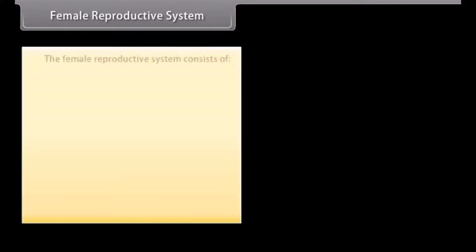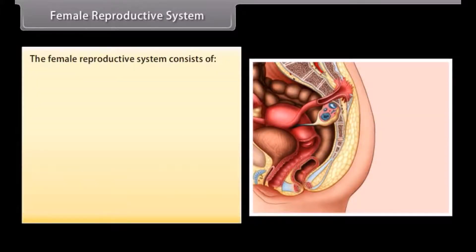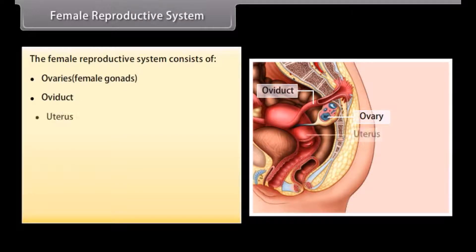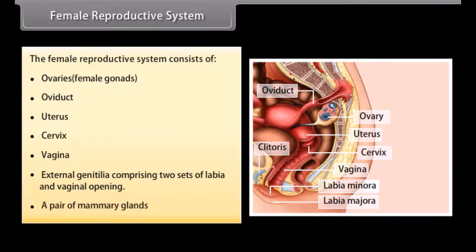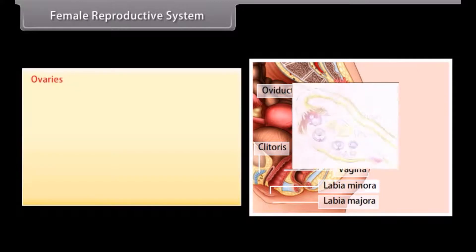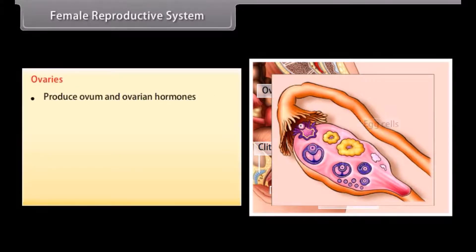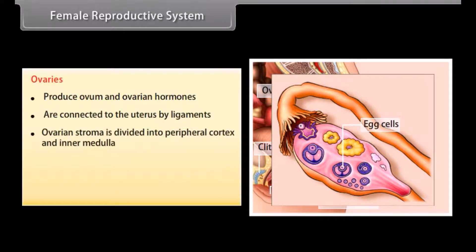The female reproductive system consists of ovaries (female gonads), oviducts, uterus, cervix, vagina, external genitalia comprising two sets of labia and vaginal opening, and a pair of mammary glands. The ovaries produce the ovum and ovarian hormones, and are connected to the uterus by ligaments. Ovarian stroma is divided into a peripheral cortex and inner medulla.